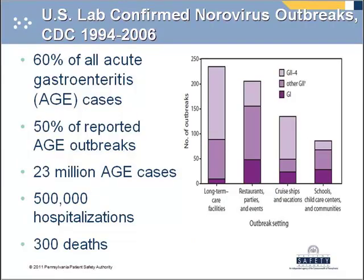Norovirus is not a new problem, but there have been recent reports of a dramatic increase in outbreaks. The illness is usually mild and short in duration; however, it can be severe and sometimes fatal to our most vulnerable patients — the elderly, the very young, and the immunocompromised. Norovirus has accounted for 60% of all gastroenteritis cases across the nation and 50% of reported outbreaks in institutional settings. The CDC estimates norovirus may cause 23 million cases every year, up to 500,000 hospitalizations mostly for dehydration, and as many as 300 deaths, mostly among elderly people in nursing homes.